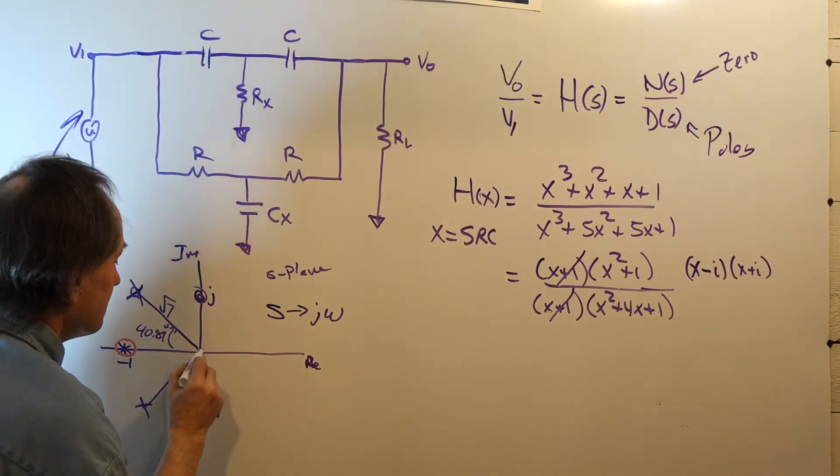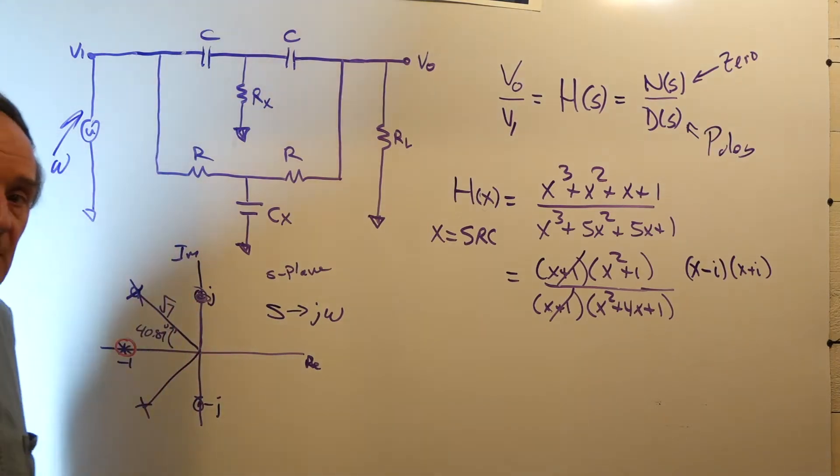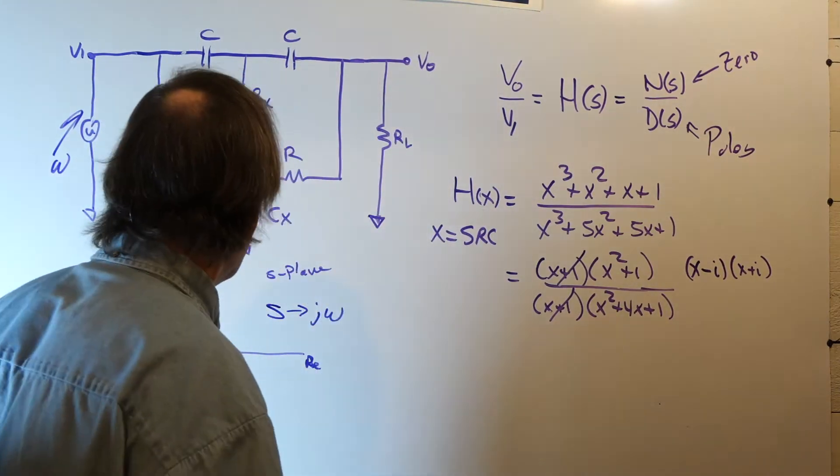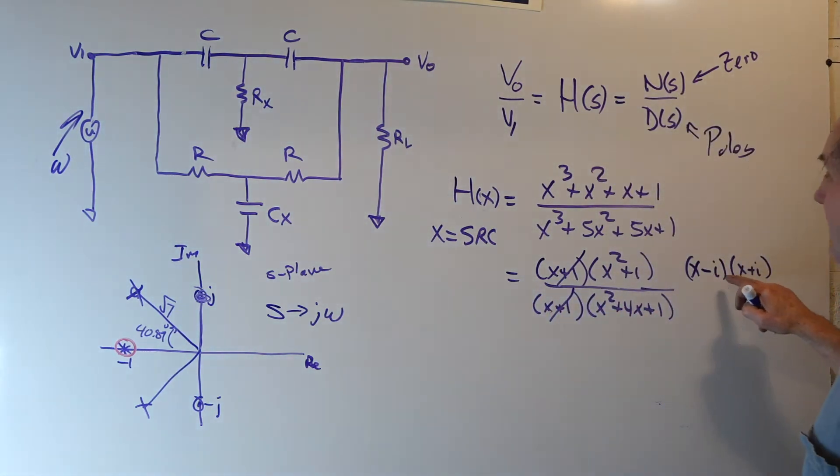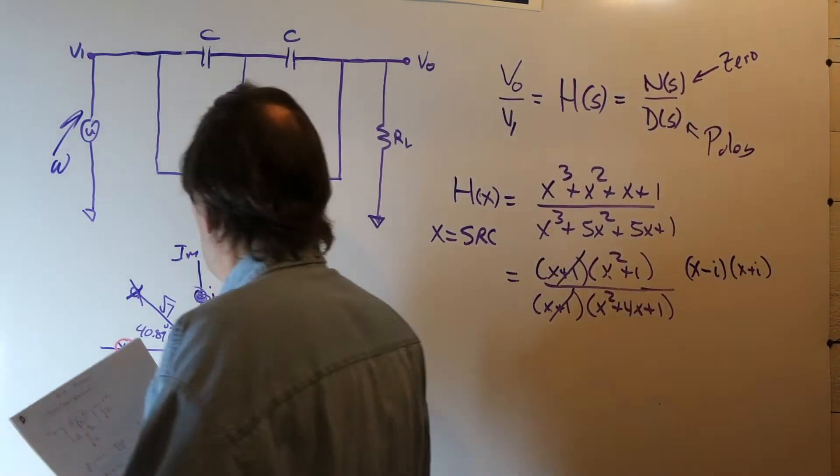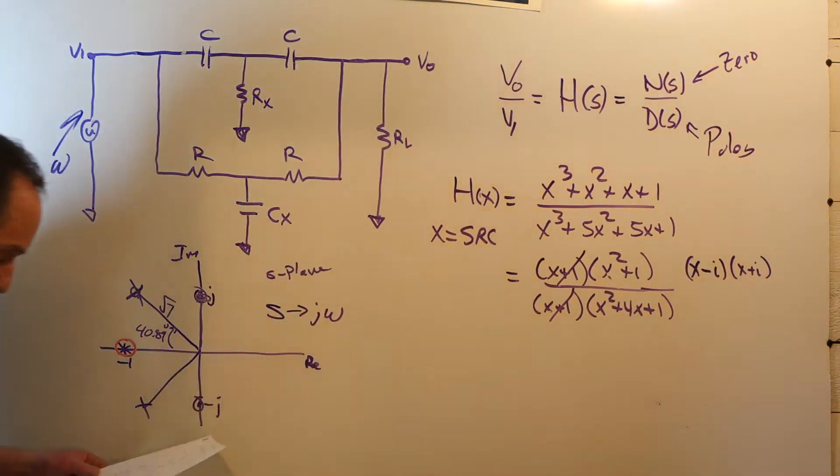our omega is moving up the J omega axis, and it encounters a zero, and it goes to zero. The response is zero. So, the fact that we have two zeros on the J omega axis means that the response nulls out and goes to zero.